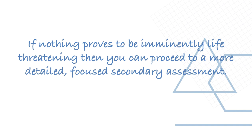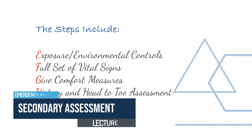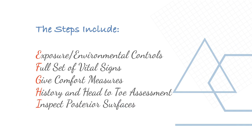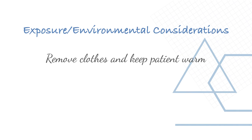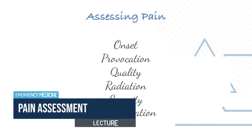If nothing proves to be imminently life-threatening, proceed to a more detailed secondary assessment. The secondary assessment should be brief, thorough, and systematic, designed to identify all injuries. The steps are EFGHI: E is Exposure and Environmental Controls; F is Full Set of Vital Signs; G is Give Comfort Measures and assess Glucose; H is History; I is Inspect Posterior Surfaces. Vital signs include blood pressure, heart rate, respiratory rate, temperature, and pain assessment including onset, provocation, quality, radiation, severity, time, and duration.